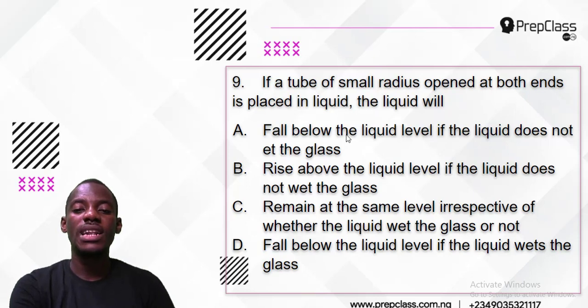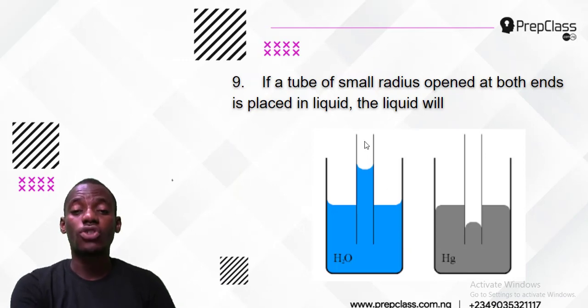The options are: fall below the liquid level if the liquid does not wet the glass, rise above the liquid level if the liquid does not wet the glass, remain at the same level irrespective of whether the liquid wets the glass or not, or fall below the liquid level if the liquid wets the glass.